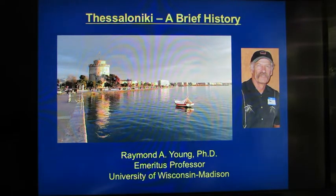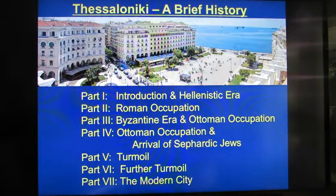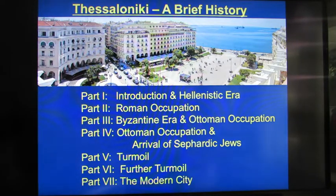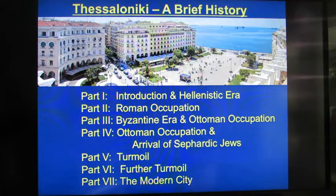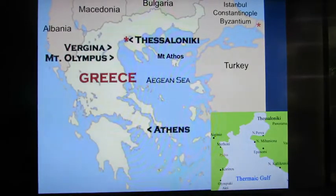I've broken my presentation down into seven different parts. Each part will be one YouTube video, and I'll talk about the Hellenistic era, the Roman occupation, the Byzantine era, the Ottoman occupation, then the arrival of the Sephardic Jews, then a period of turmoil with the many wars that happened in Thessaloniki, and then we'll talk about the modern city.